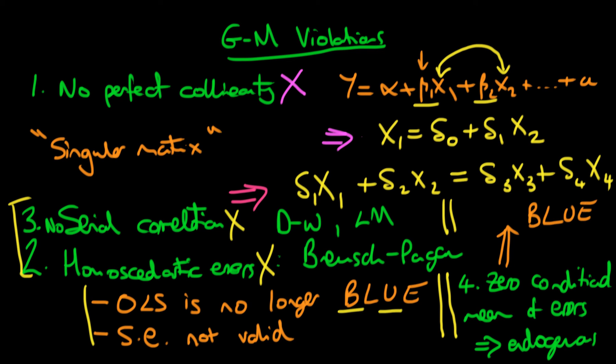OLS is no longer BLUE. In particular, it is no longer unbiased. So that means that if I took repeated samples from my population and I used OLS on each of those samples, then on average, OLS would not get it right. It would not estimate the population parameters correctly. So that's why it's a particularly important violation of the Gauss-Markov conditions.